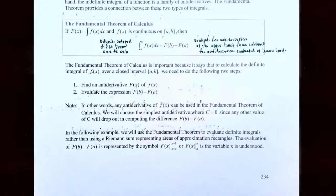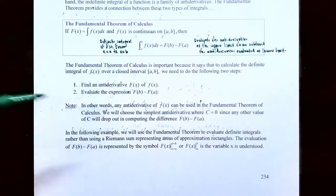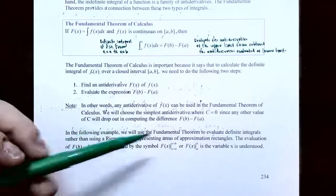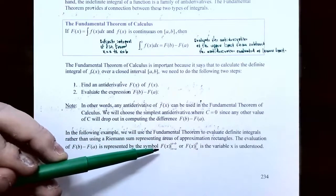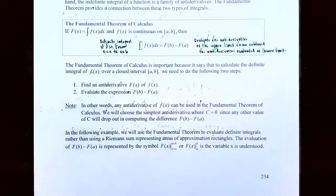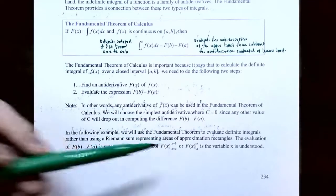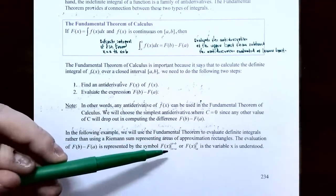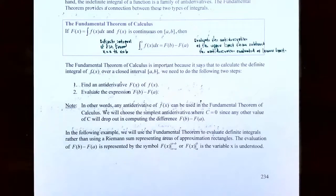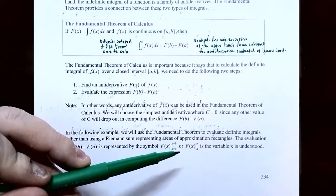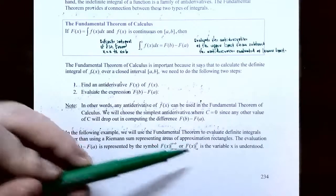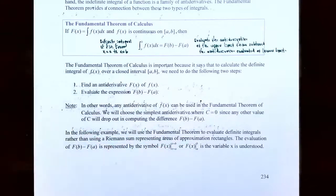In the following examples, we're going to use the Fundamental Theorem of Calculus to evaluate definite integrals rather than using Riemann sums. The evaluation F(b) minus F(a) can be represented using this notation: capital F of x with a vertical bar — which means evaluate — with the upper limit x equals b on top and the lower limit x equals a on the bottom. Or if the variable x is understood, you can just write capital F of x, vertical bar, b on top and a on the bottom.